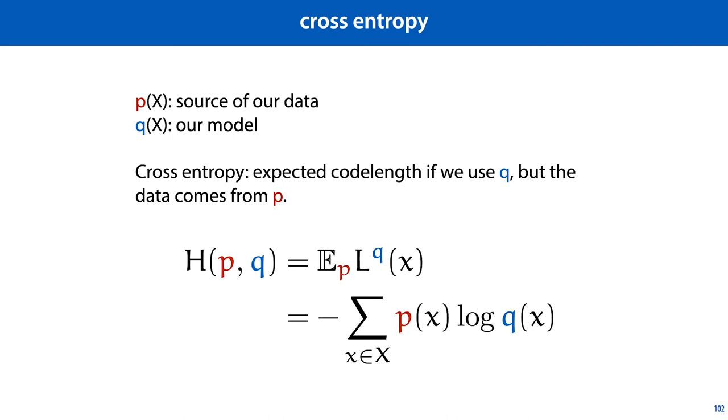From that, we can conclude two things. The code corresponding to p provides the best expected code length. And the cross-entropy is a good way to quantify the distance between two distributions, because it's minimal when they're the same, and it gets bigger as the two distributions diverge.